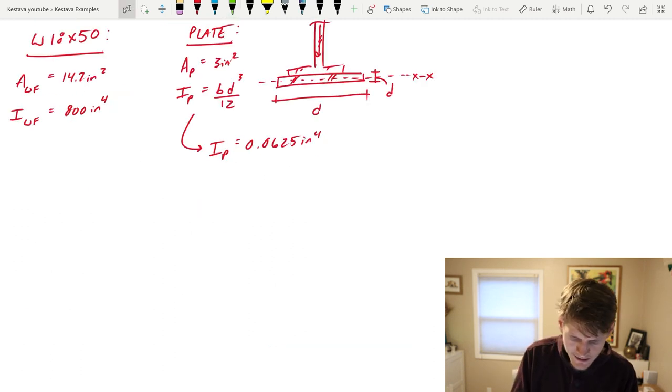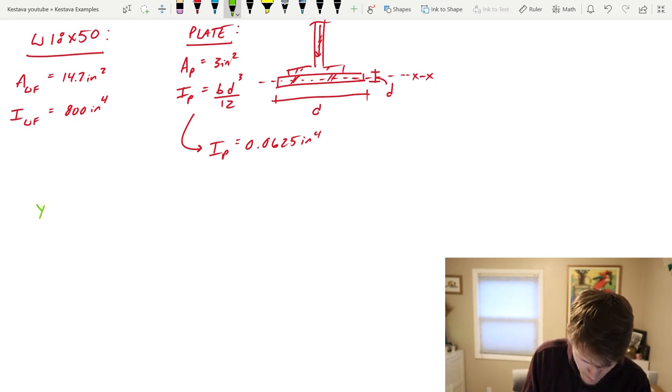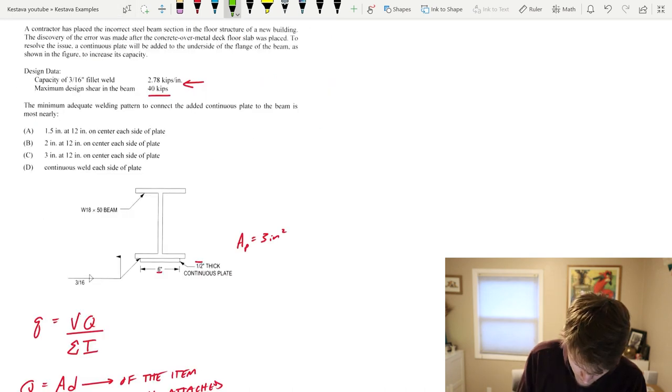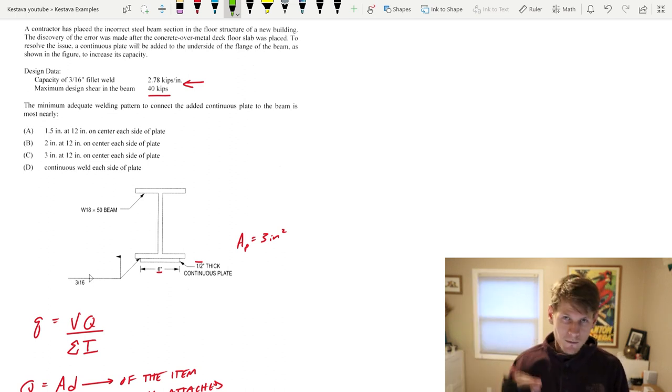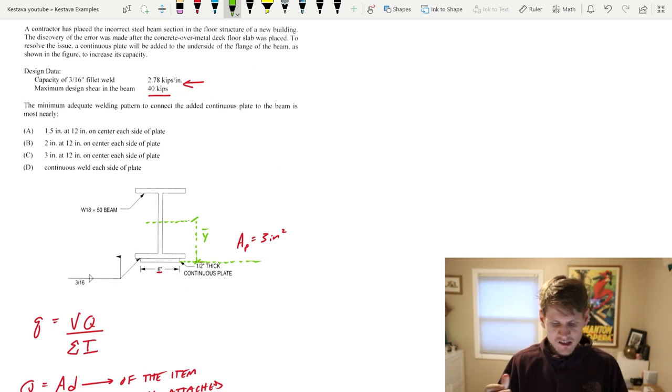We need d. In order to find d first we need y bar, and I'm going to scroll up to the top. Y bar is just, you can take it from any direction. You can take it from the top or from the bottom of the system. I'm going to take it from the bottom. So basically right at the bottom edge of the plate is my starting point.